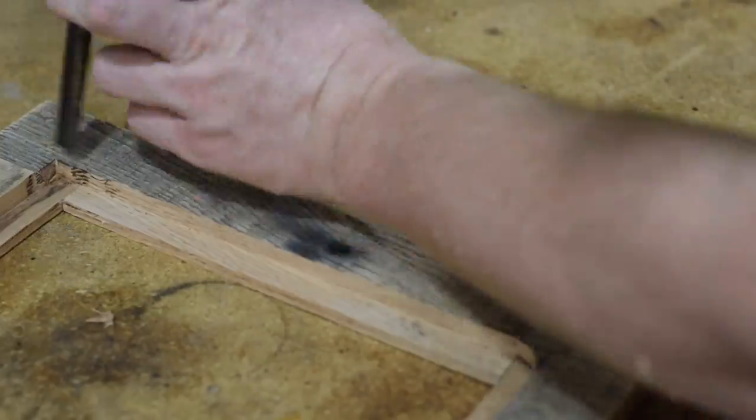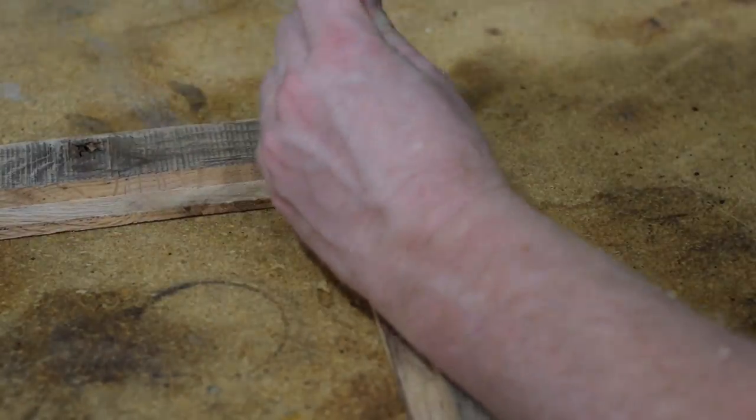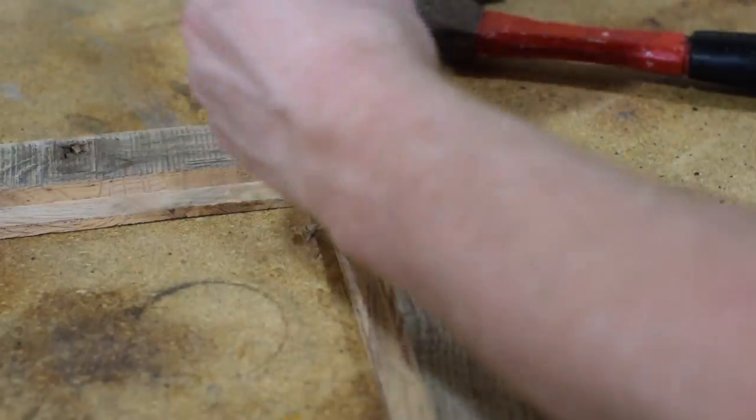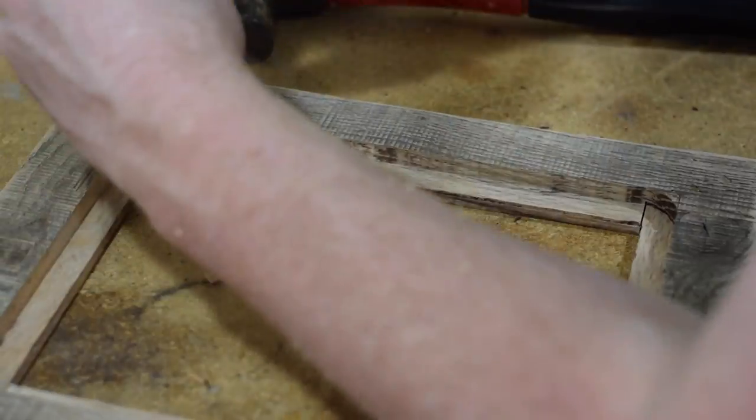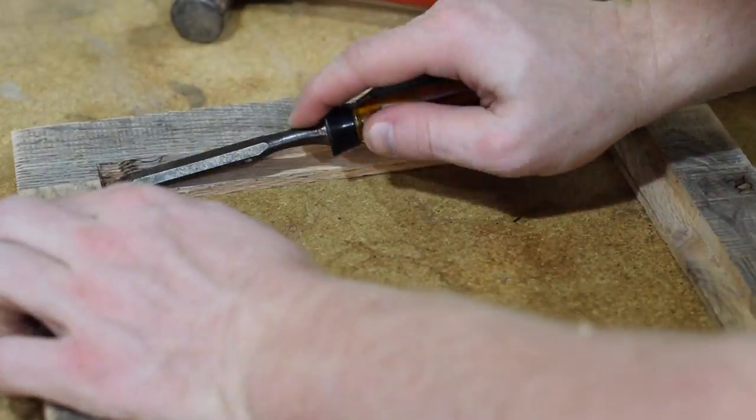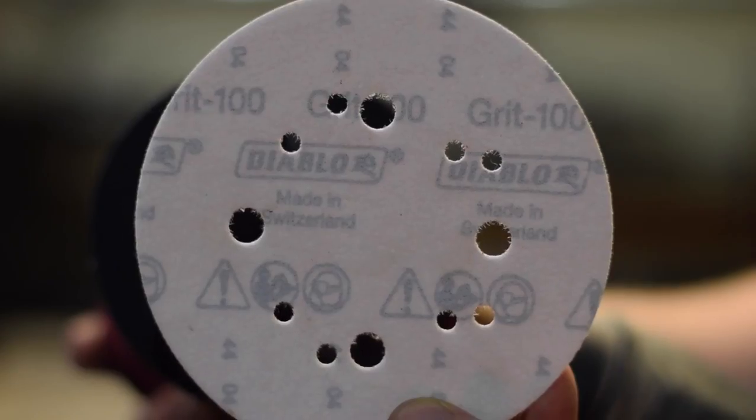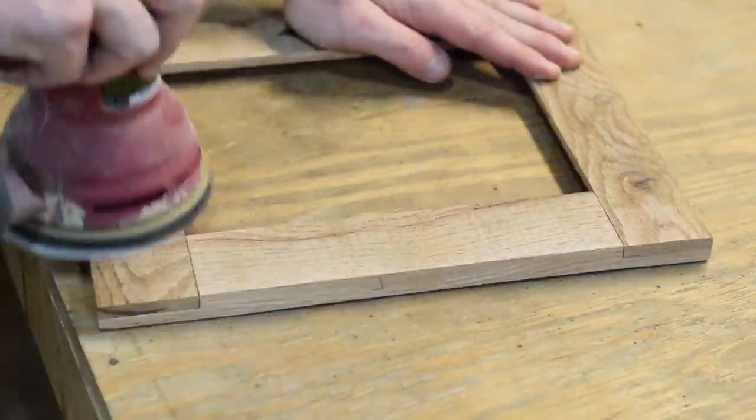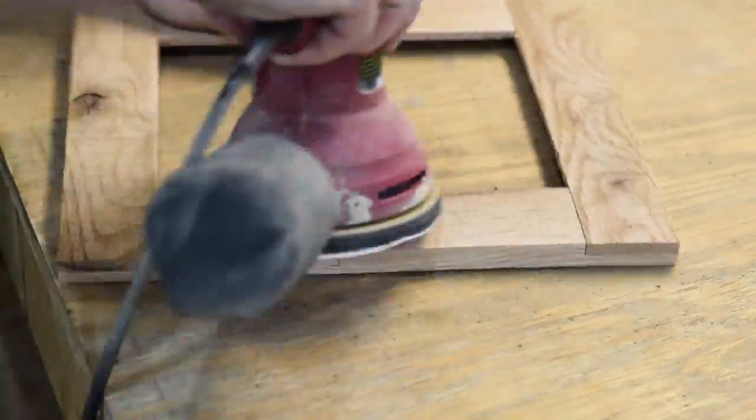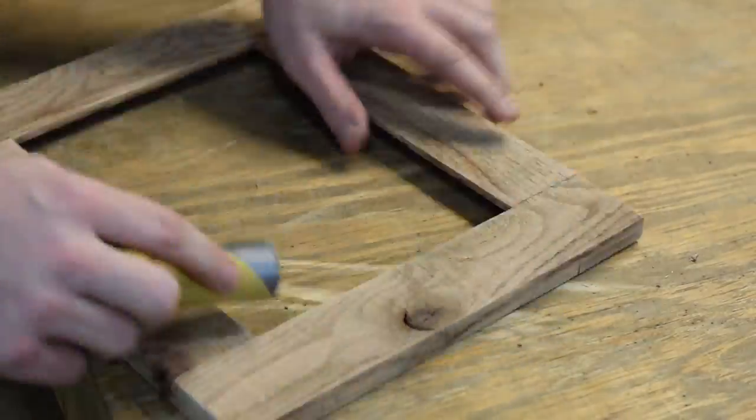Now this took longer than I expected but that's because I decided to use oak pallet wood and not pine pallet wood. So keep that in mind. All right, let's do some sanding, just smoothing out some of the edges.